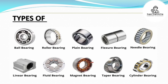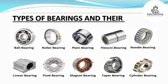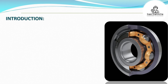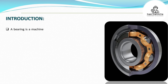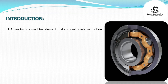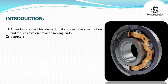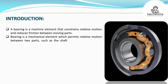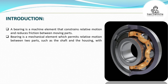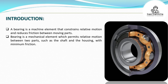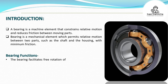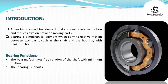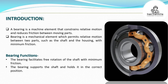A bearing is a machine element that constrains relative motion and reduces friction between moving parts. It is a mechanical element which permits relative motion between two parts, such as the shaft and the housing, with minimum friction.